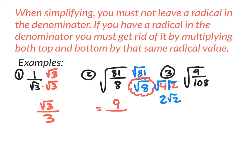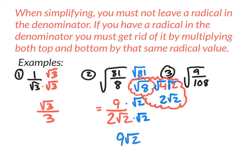So the square root of 8 is really 2 square root of 2. I write 2 square root of 2 in the denominator. I do not want that square root there. How can I get rid of it? Multiply it with itself — in this case, multiply by square root of 2, top and bottom. On top I have 9 times square root of 2, which is 9 square root of 2. On the bottom, the 2 that's already there times square root of 2 times square root of 2 — and square root of 2 times square root of 2 is just 2 — so the denominator becomes 4. My final answer is 9 square root of 2 over 4.